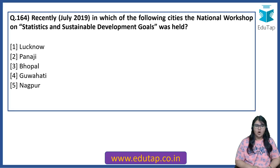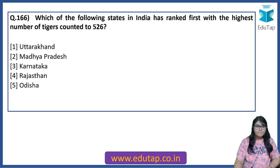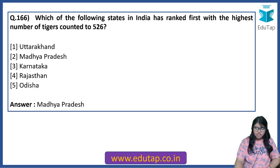Recently in July 2019, in which of the following cities was the National Workshop on Statistics and Sustainable Development Goals held? The venue is Lucknow. Which of the following states has organized a global summit titled 'Development Partners Conclave' to raise money for reconstruction? The answer is Kerala. Which of the following states in India has ranked first with the highest number of tigers, counted at 526? The answer is Madhya Pradesh.